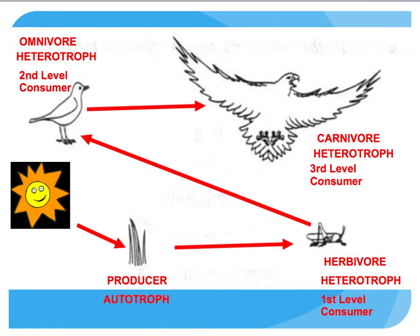Hopefully you've had a chance to label these. The grass is receiving sunlight energy, so it's a producer or autotroph. The cricket or grasshopper is an herbivore, a heterotroph, and a first-level consumer. The bird is a second-level consumer and an omnivore because it eats grasshoppers and also seeds or nuts from the grass, making it a heterotroph and second-level consumer. The eagle is a carnivore, a heterotroph, and a third-level consumer.